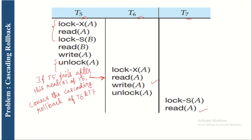The problem arises as follows: after T5 unlocks data item A, T6 immediately acquires an exclusive lock on A, performs read and write operations, and unlocks it. Then T7 gets a shared lock on A. But if T5 fails after releasing its lock on A, it must be rolled back. This rollback of T5 causes the rollback of T6 and T7 as well — this is known as cascading rollback.